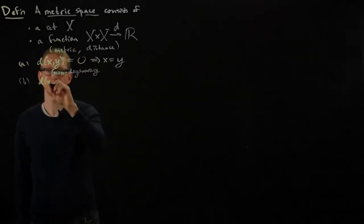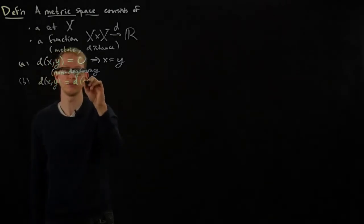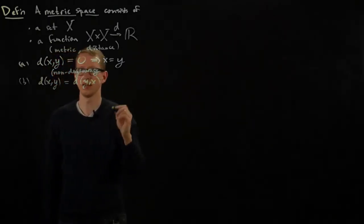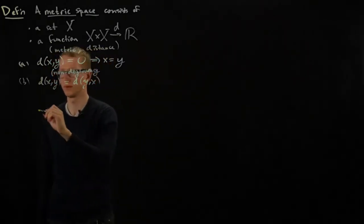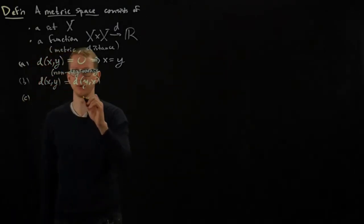Two, the distance is symmetric. d(x,y) equals d(y,x) for all x and y. This is called the symmetric property.